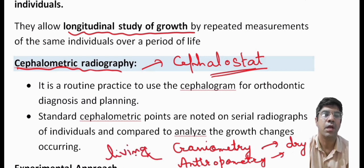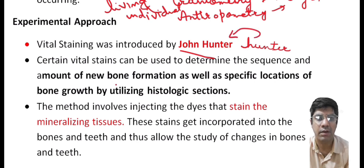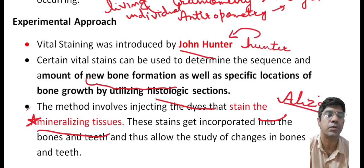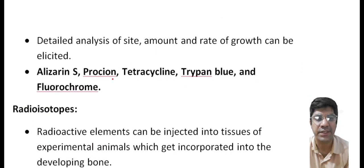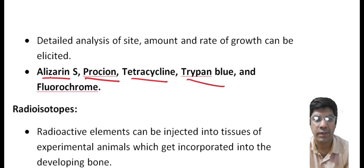The major experimental approach is vital staining, which was introduced by John Hunter — remember this for your MCQ. The technique involves injecting dyes into animals to observe the pattern of stained mineralized tissue. The dyes are absorbed by the bones and teeth, incorporating into the mineralized tissue and making them visible for later observation. One example of a dye is alizarin, which is very effective for vital staining — it remains within the bone and teeth, allowing researchers to detect and study the stained areas.